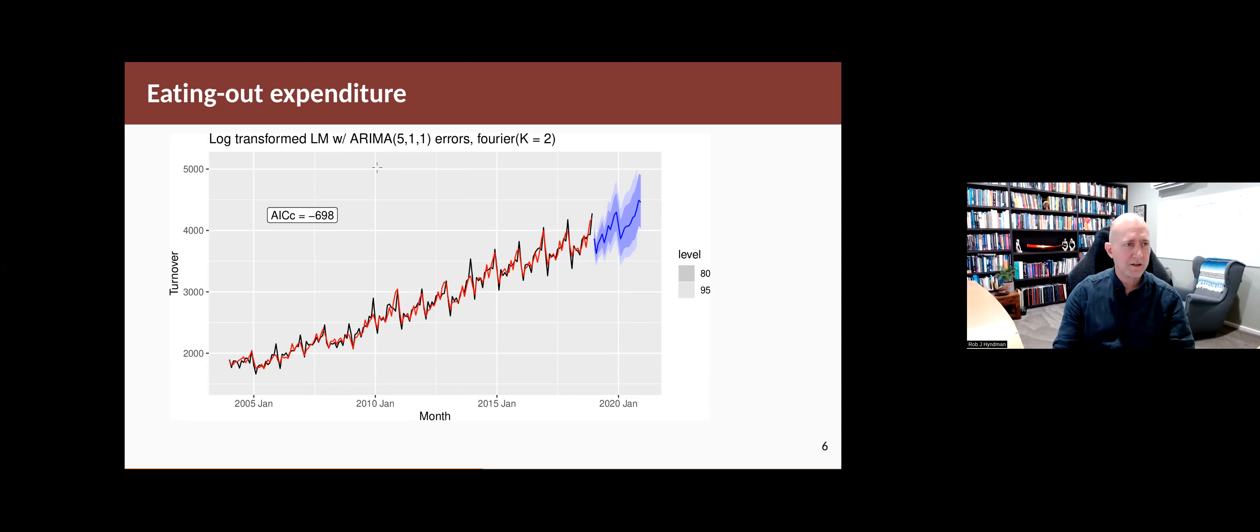And as we increase the value of k, the shape of the seasonality gets a little more complicated. And you don't see it here, but you'll notice that the ARIMA term will get simpler for larger values of k.